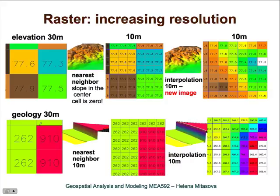Here is the geology example again. You can see that resampling with nearest neighbor is what is appropriate — we really need the sharp change between those two classes. If you do it with interpolation, you are generating practically nonsense.